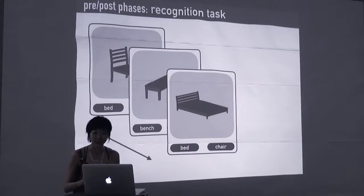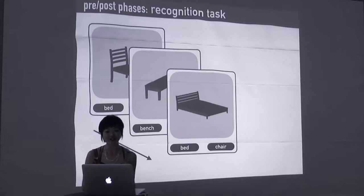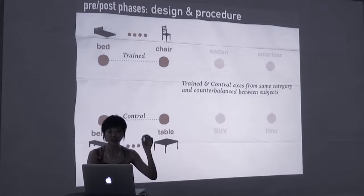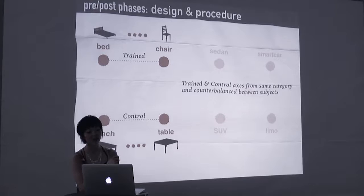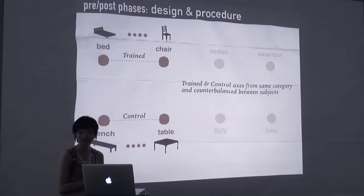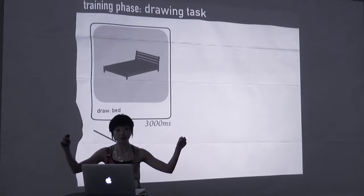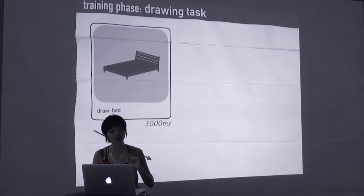Okay. They did many such recognition trials, both before and after sketch training, where they were shown morphs that were often ambiguous, and from a variety of different viewpoints. Each participant was assigned, at random, two disjoint pairs from one category. So one of these axes would be trained, and the other axis would be the control. During the training phase, people practiced drawing the endpoint objects from the trained pair.